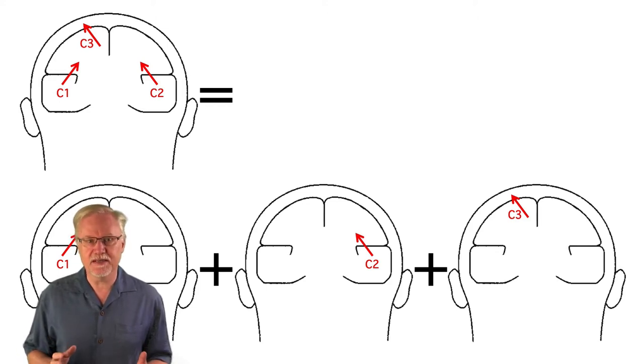So, the scalp signals we would get from these three generator sources when they're present simultaneously is equal to what we'd get by summing the signals for each source alone.